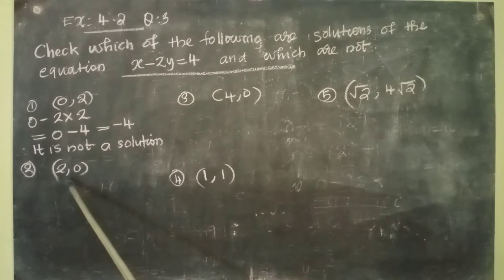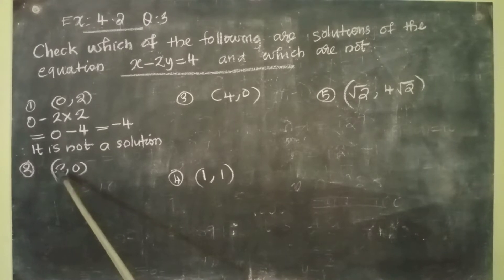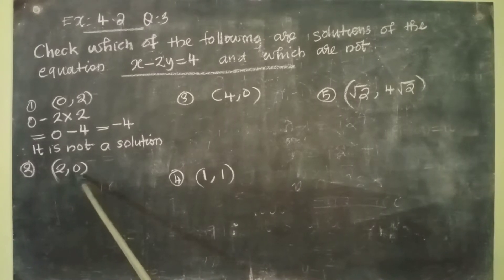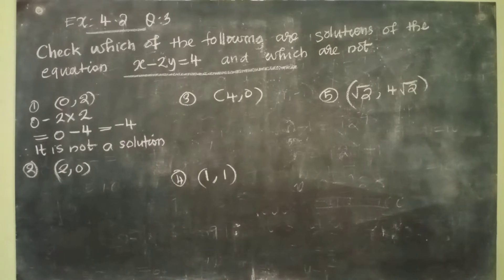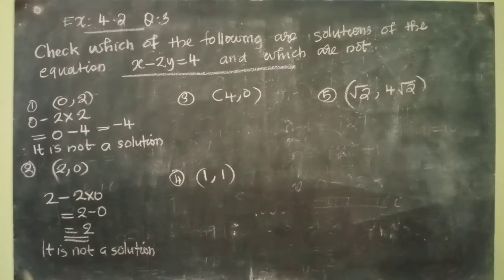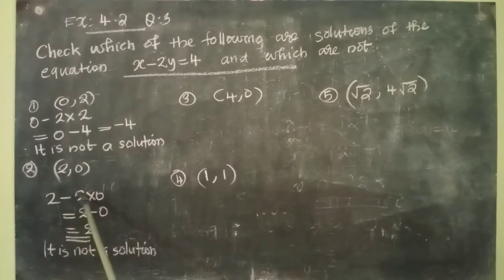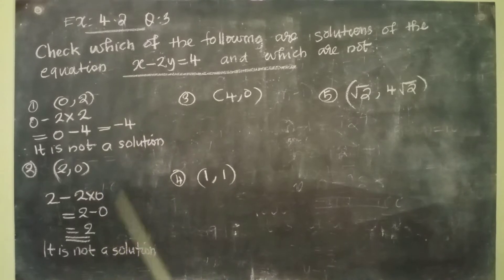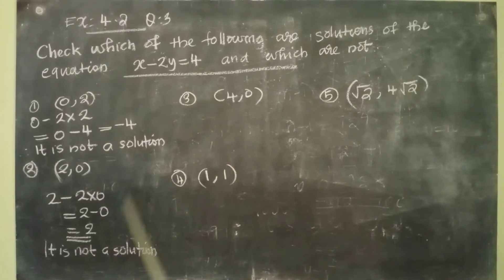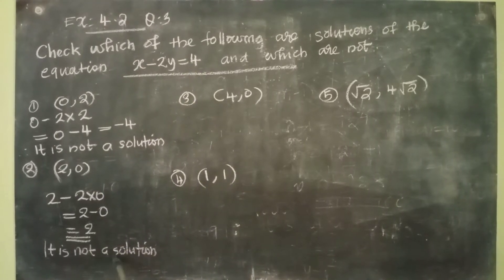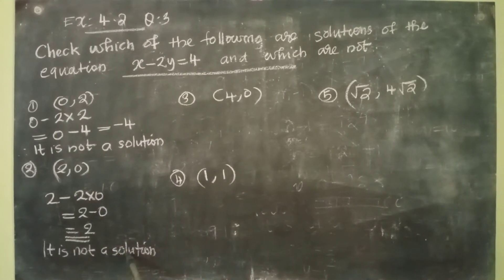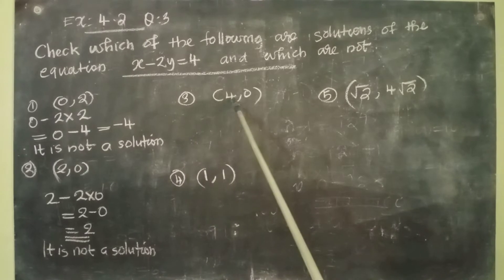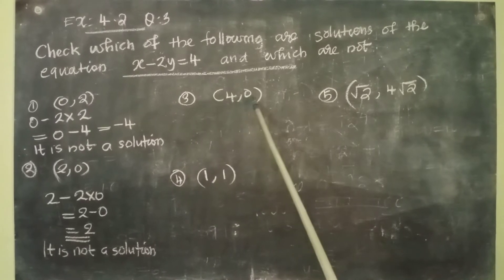The next pair is (2, 0). The value of x is 2 and the value of y is 0. We substitute it in the equation and get 2 minus 2 into 0, that is equal to 2 minus 0, equal to 2. We get 2, but the right-hand side is 4, so we can conclude it is not a solution.